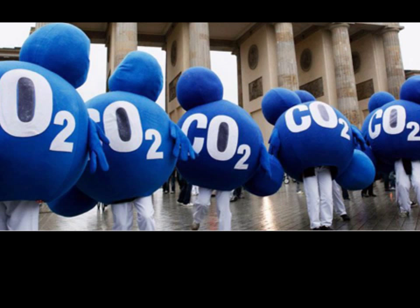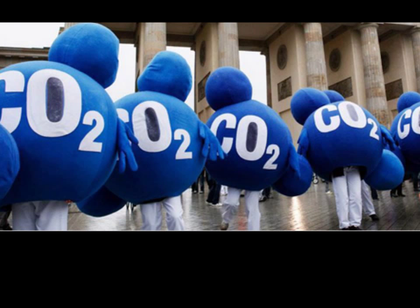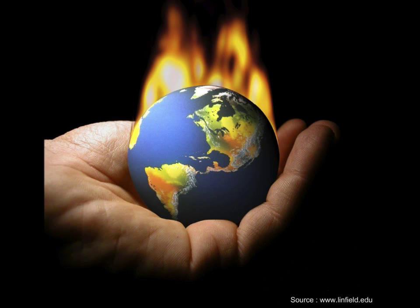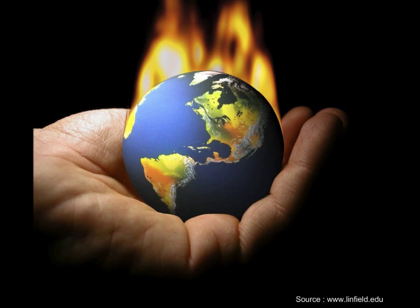Brazil and South Africa have committed to reduce outright emissions — Brazil by between 1% and 38.9% below what they would otherwise have been by 2020, and South Africa by 34% below what otherwise would have been in 2020. China and India have committed to lower their greenhouse gas emissions per unit of GDP — China by 40-45% below 2005 levels and India by 20-25% below 2005 levels by 2020.